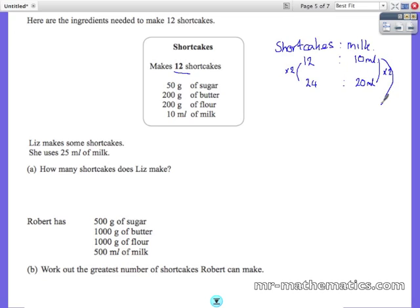Now we can work out for 5ml, which is half, so that will be 6 shortcakes. So for 25ml we can put those two together, and we can work out that for 25ml you get 30 shortcakes.